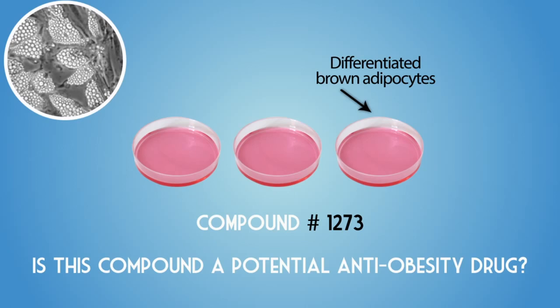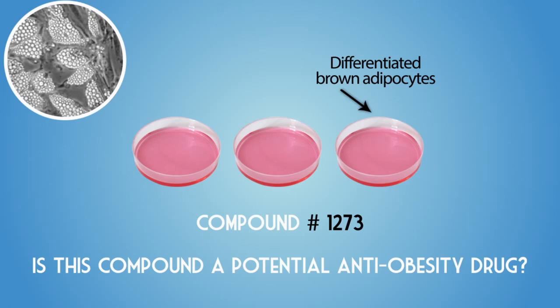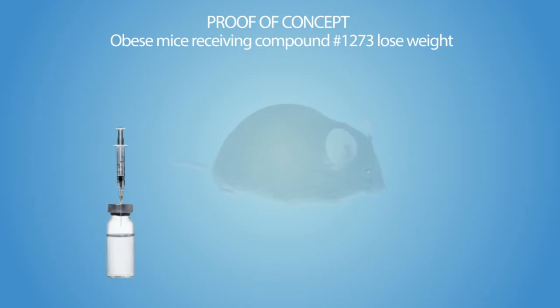Proof of Concept: Obese mice receiving compound 1273 lose weight. Thus, in vitro screening of our progenitor cells and in vivo studies in mice would eventually allow identifying one or several compounds ready for clinical studies.